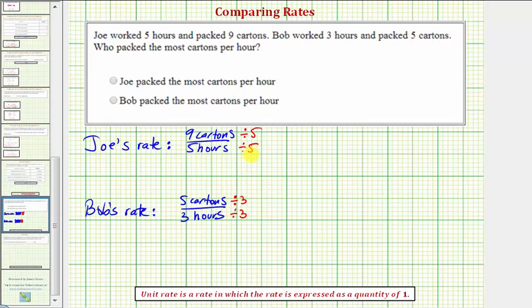Notice how in our denominator here, we'll have five divided by five, which equals one. And here we'll have three divided by three, which equals one.